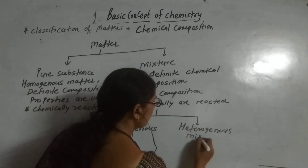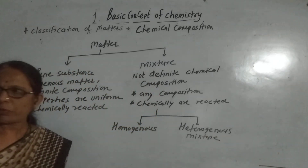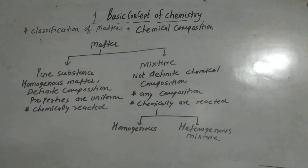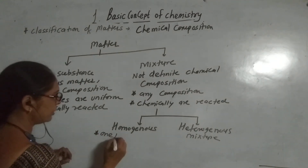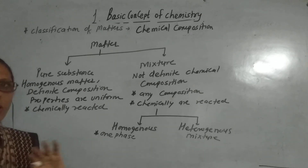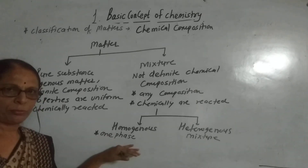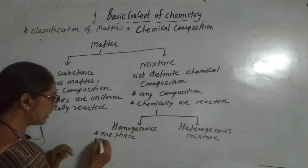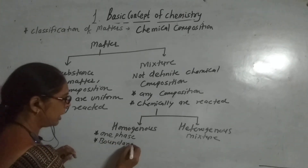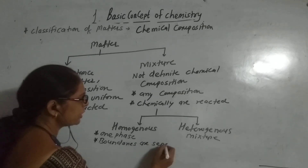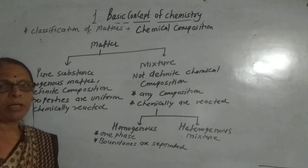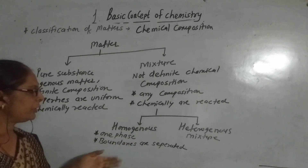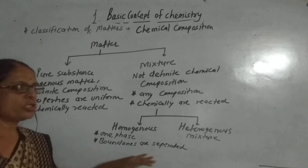When I say homogeneous mixture — from the name you can understand — a homogeneous mixture is present in one phase. Whatever the constituents are, they are uniform and in one phase. Their boundaries are not separated. For example, if salt is dissolved in water or sugar is dissolved in water, you cannot separate the salt from the water — they are in one phase and boundaries are not separated. So they are homogeneous in that sense.